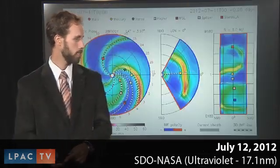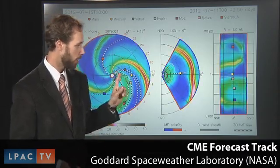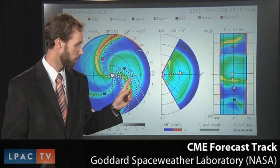This solar flare also unleashed a coronal mass ejection, which you can see the forecast track here. The forecast was a direct hit on the Earth, this little yellow dot.